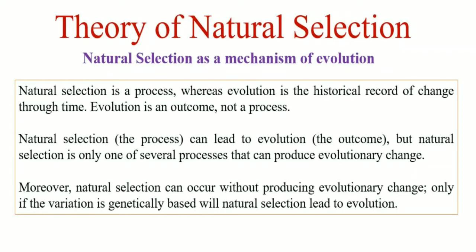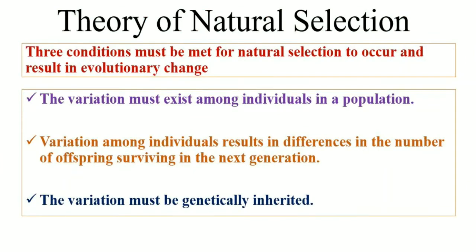Natural selection is merely one of several processes that result in evolutionary change. Natural selection may not produce evolutionary change if the trait that is favored or selected by nature is not genetically based. Natural selection will result in evolutionary change only if the trait favored by nature is genetically based. For natural selection to occur and result in evolutionary change, three conditions must be met.